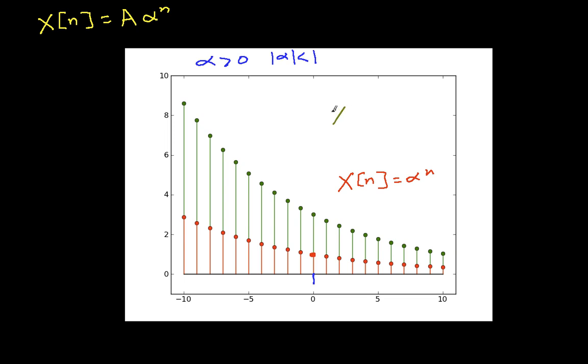For the green one, I have x[n] is equal to 3 times alpha to the n. So you can see that by multiplying everything by 3, I've increased the magnitude here to 3, and I still have the same slope or the same shape in the sense that as n is positive, it decreases, and as n is negative, it increases. And in fact, I still actually have the same ratio between adjacent points. So for example, this point here is alpha times smaller than this point. Well, that's also true up here. This point here is alpha times smaller than this point. So I still have the same ratio between points, but because I've multiplied it by this 3, I have a larger amplitude.